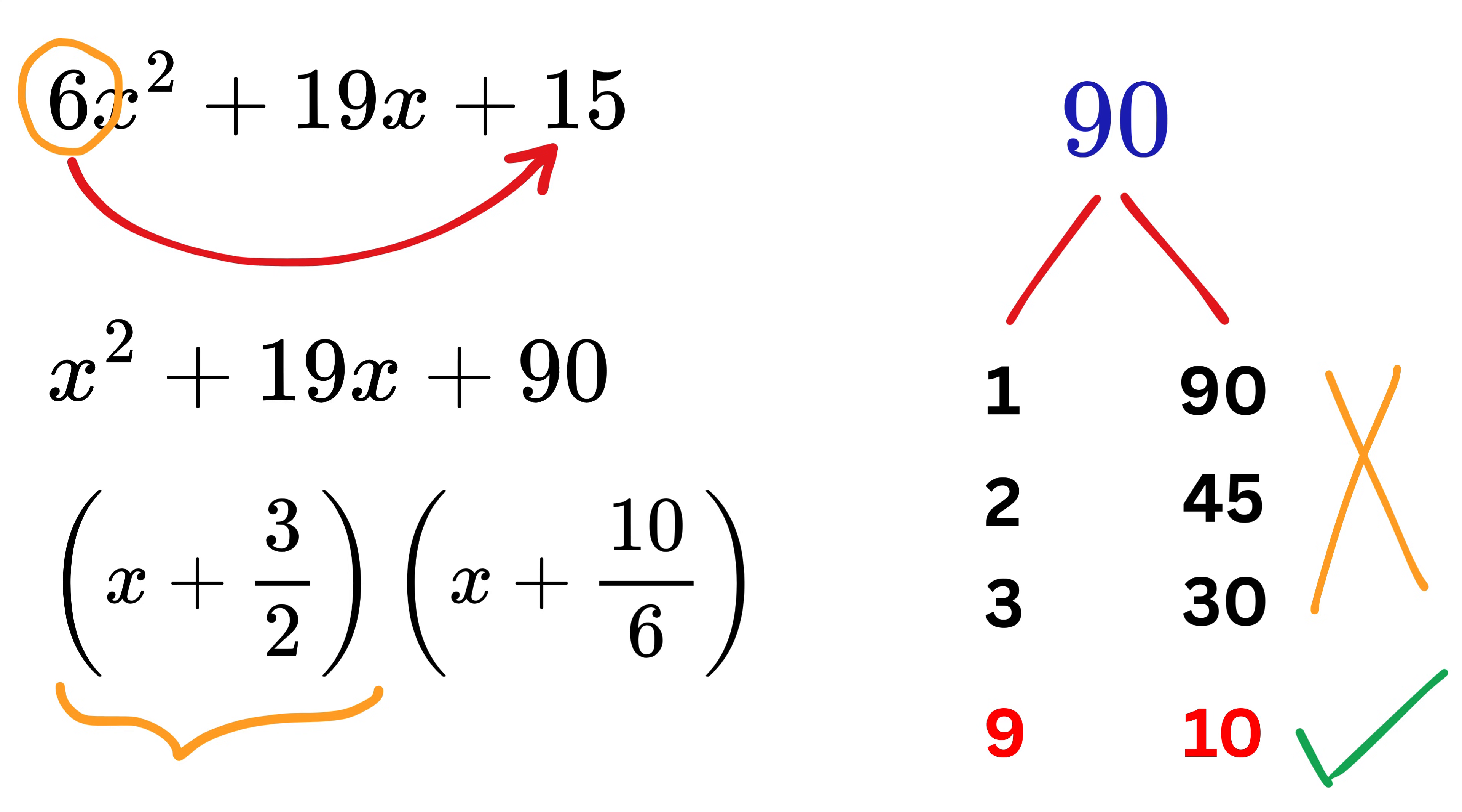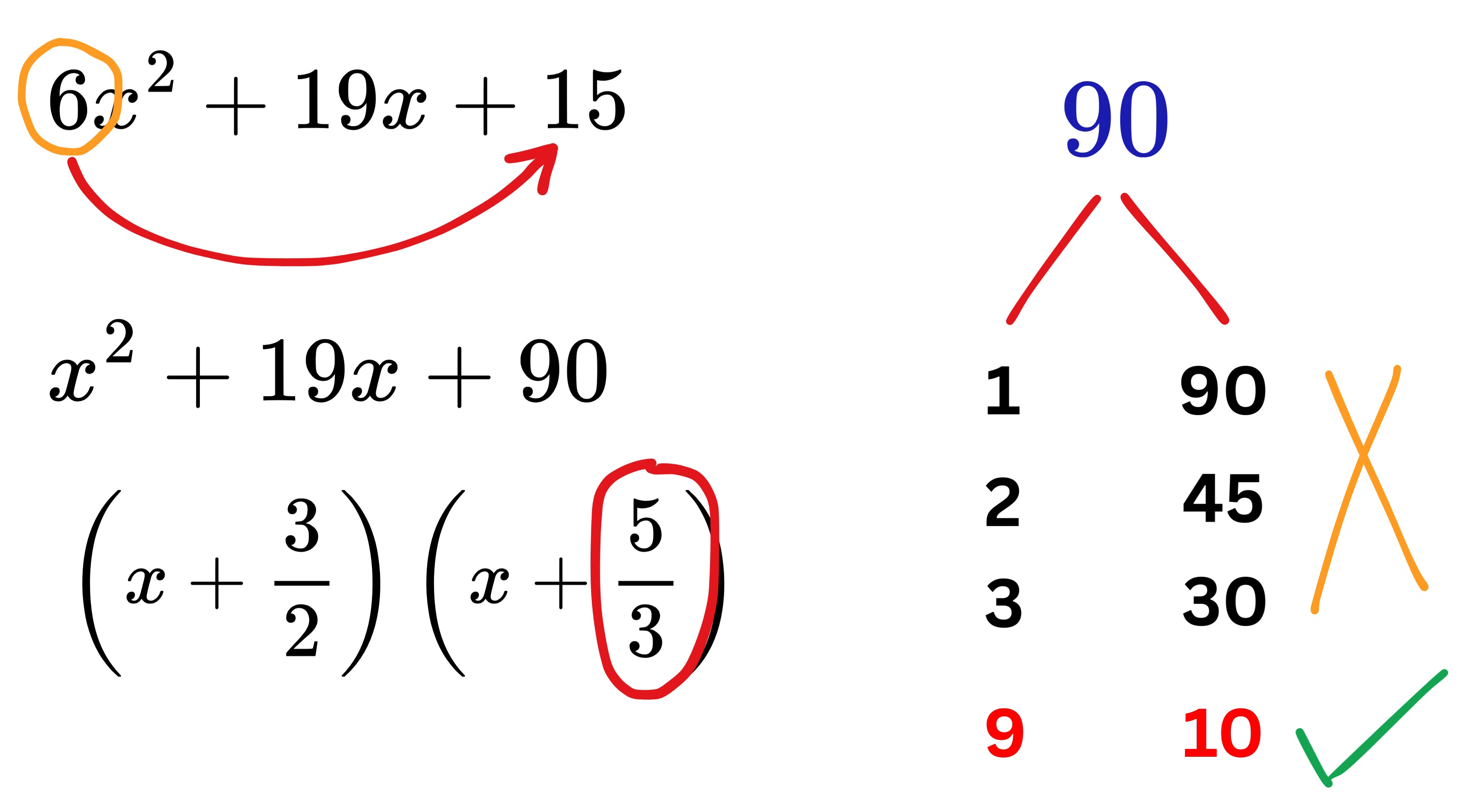So the factor becomes x plus 3 divided by 2. Similarly, 10 divided by 6 reduces to 5 divided by 3. So the factor becomes x plus 5 divided by 3.